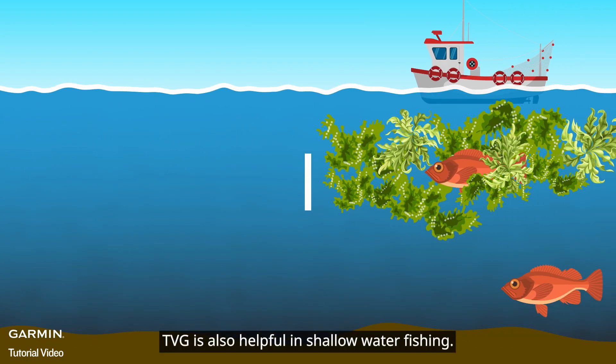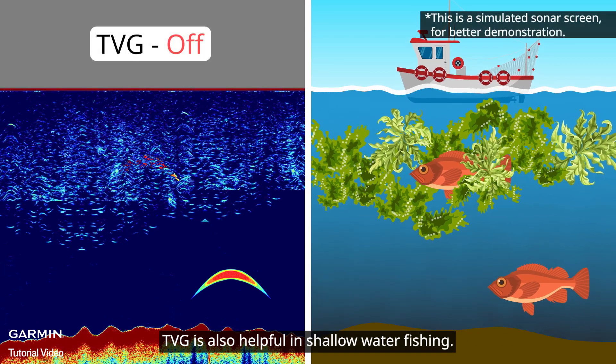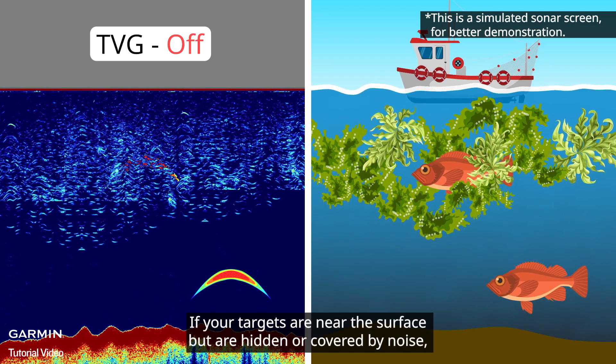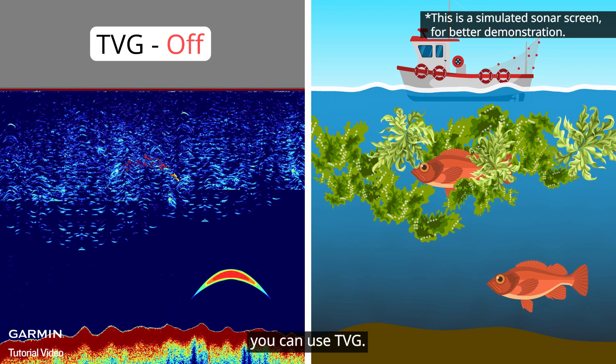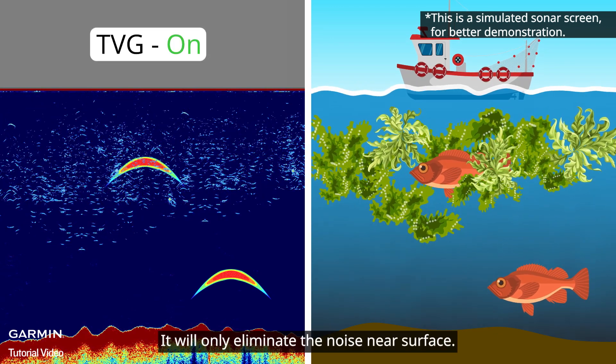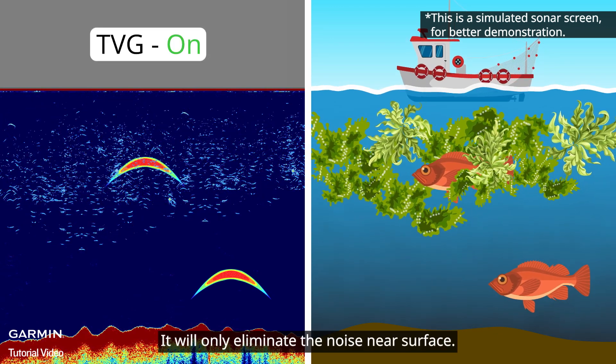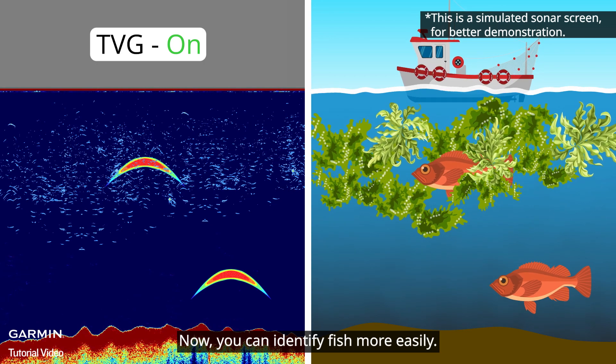TVG is also helpful in shallow water fishing. If your targets are near the surface but are hidden or covered by noise, you can use TVG. It will only eliminate the noise near surface. Now, you can identify fish more easily.